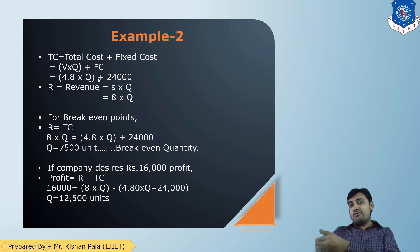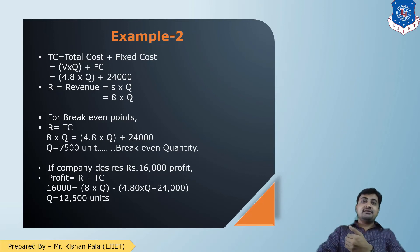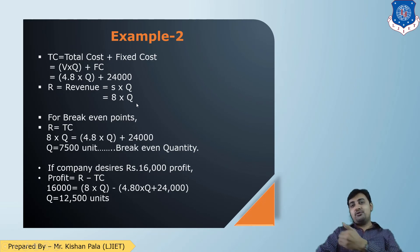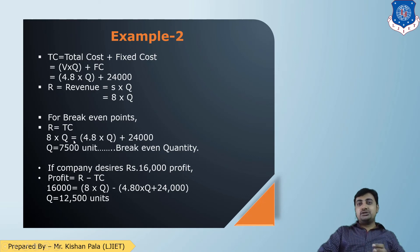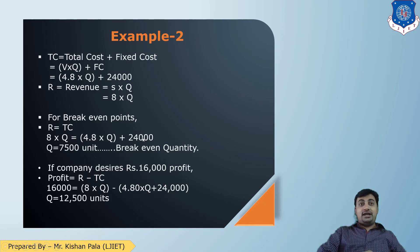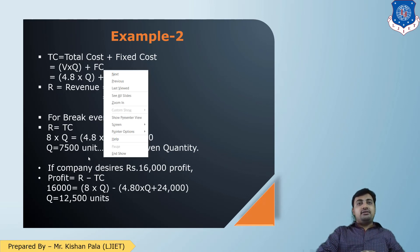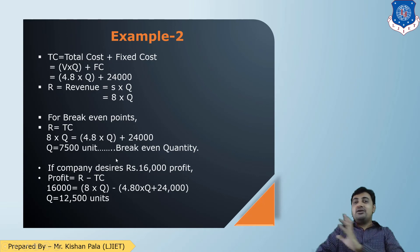Revenue R = S × Q = 8 × Q. For the Break-Even point, R = TC: 8 × Q = 4.8 × Q + 24,000. Solving this, we get the break-even quantity = 7,500 units.